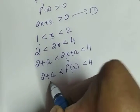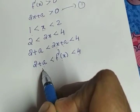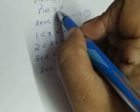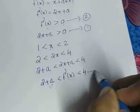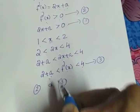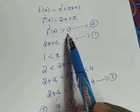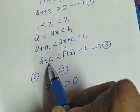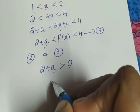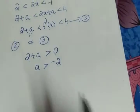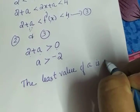So f'(x) takes a value greater than 2 + a and less than 4 + a. The question is to find the least value of a. We know the condition that f'(x) > 0 since it is strictly increasing. Combining these, since f'(x) > 2 + a and f'(x) must be greater than 0, we conclude that 2 + a must be greater than or equal to 0. Taking 2 to the right side, we get a ≥ -2. So the least value of a is -2.